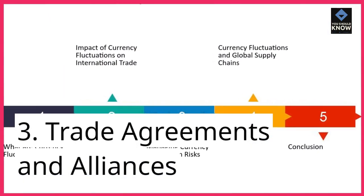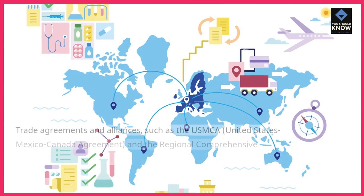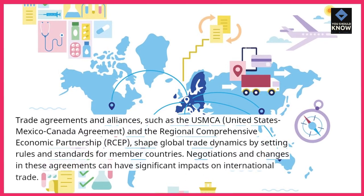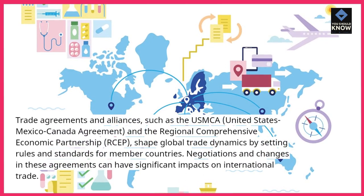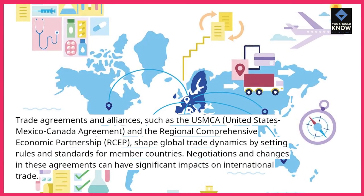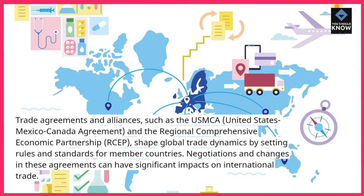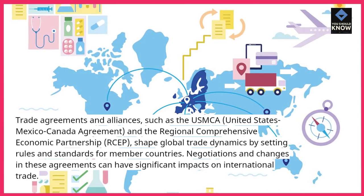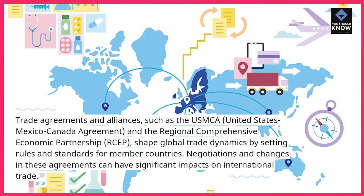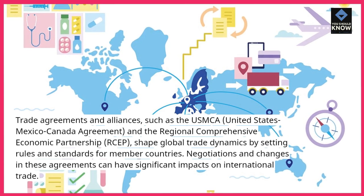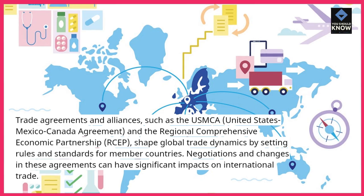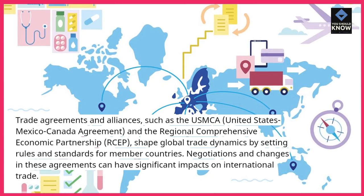3. Trade agreements and alliances. Trade agreements and alliances, such as the USMCA (United States-Mexico-Canada Agreement) and the Regional Comprehensive Economic Partnership (RCEP), shape global trade dynamics by setting rules and standards for member countries. Negotiations and changes in these agreements can have significant impacts on international trade.